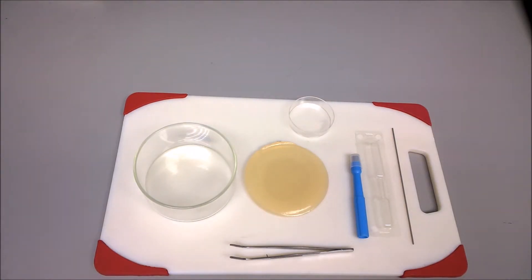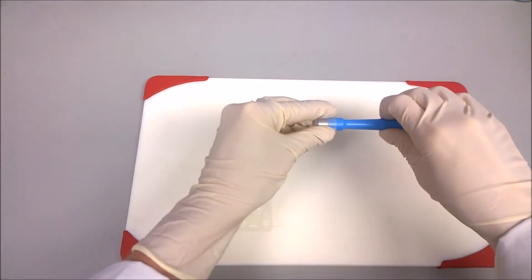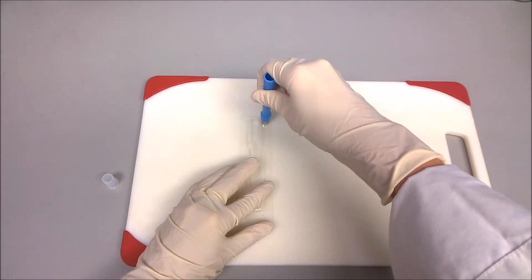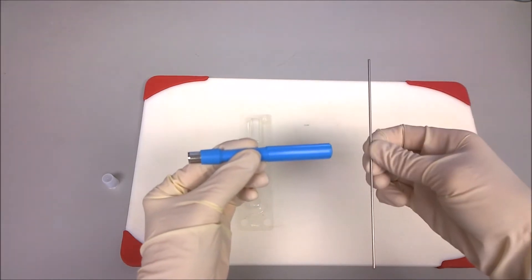Using tweezers, unmold the hydrogel and place it on the cutting board. Using an 8 millimeter biopsy punch, first punch the plastic to create a disc that will protect the hydrogel during sample extraction when using the metal rod.